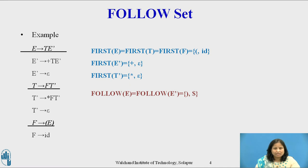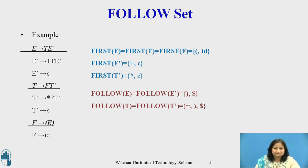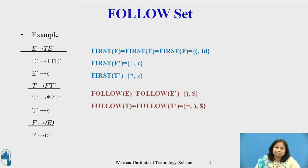By Rule 3 applied to the production T derives F T', plus, right-parenthesis, and dollar are in the follow of T'. Hence, follow(T') equals {plus, right-parenthesis, dollar}.